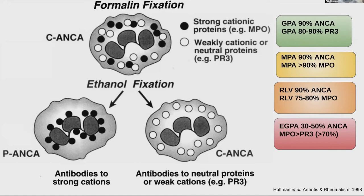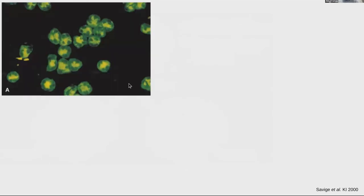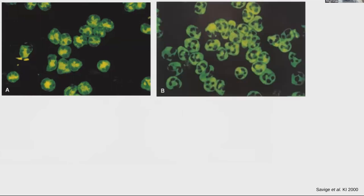In EGPA, if there is glomerulonephritis involvement, patients are more likely to be ANCA positive. ANCA-negative disease tends to cause more cardiac or neurological disease. You can see this IF picture of a patient with PR3 ANCA vasculitis where the chromatin is condensed.